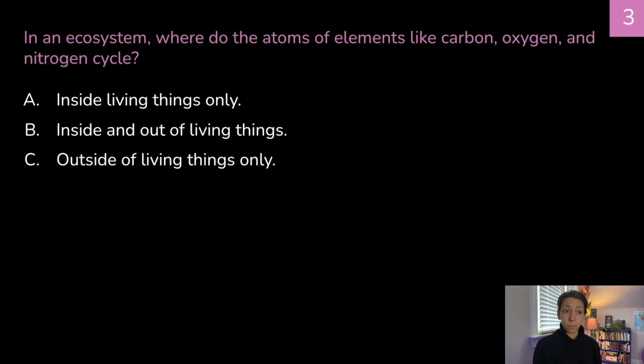In an ecosystem where do the atoms of elements like carbon, oxygen, and nitrogen cycle? a inside living things only, b inside and out of living things, or c outside of living things only. Think about it. Correct answer is b inside and out of living things. Hopefully this is a pretty easy one for you especially since we started to talk about some of those cycles in this video.